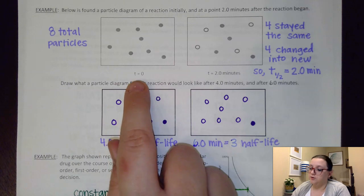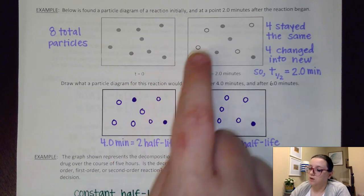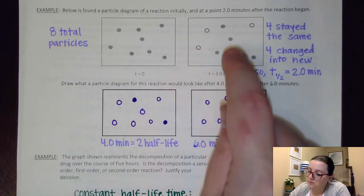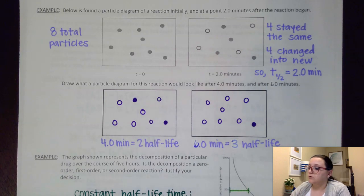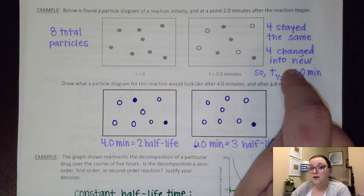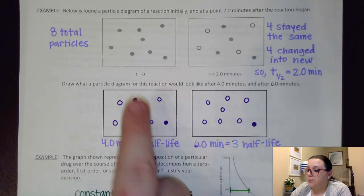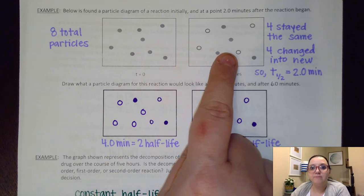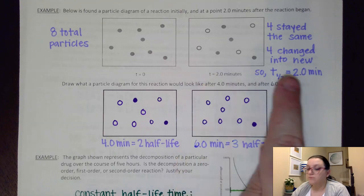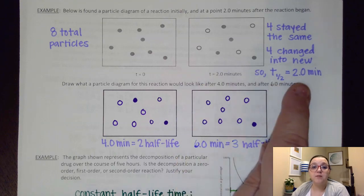Well, as I go here to two minutes, what I notice is that I'm down to only four of those original particles that we had. And then I also see four particles of something brand new. So again, four stayed the same, four changed into something new. Now recognize that that means half of my substance changed into something new, which means that this underwent a half-life as I changed from zero to two minutes. So therefore, our half-life time would be two minutes for this particular process, for this particular reaction.